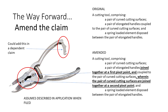One more thing to point out is that this example assumes we had an adequate description of how the device operates with the two pivot points in the original application. There is a rule that you cannot add new subject matter to an application once it is filed. We are allowed to amend claims, but only to the point that those claims are supported by what we said in the original application as filed. If our application did not mention the pivot points at all, it would be difficult to amend the claims to recite that feature.